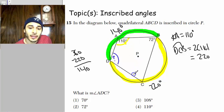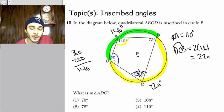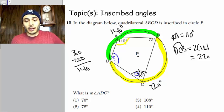And now if that's 140, this angle here is half of 140 because it's the inscribed angle. So that means this is 70.